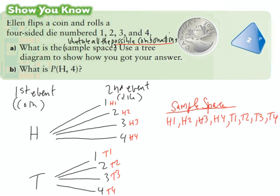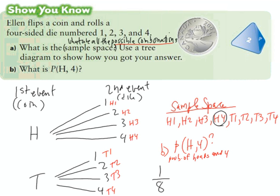Question B says: what is P(H, 4)? This is a fancy way of saying the probability of heads and four. If we go back up to our sample space and circle all the heads-four combinations, there's just one, so the probability as a fraction is one out of eight.